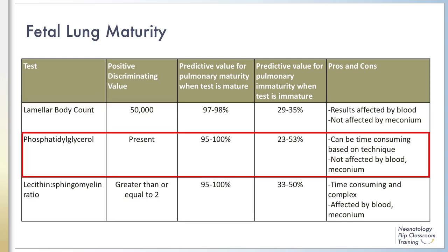Phosphatidylglycerol is a constituent of surfactant that begins to increase significantly in amniotic fluid after 35 weeks. It increases the spread of phospholipids in alveoli; therefore, its presence indicates an advanced state of fetal lung development and function. Depending on the technique used, phosphatidylglycerol testing can be very time consuming, though faster assays are available. Importantly, this test is not affected by the presence of blood or meconium.